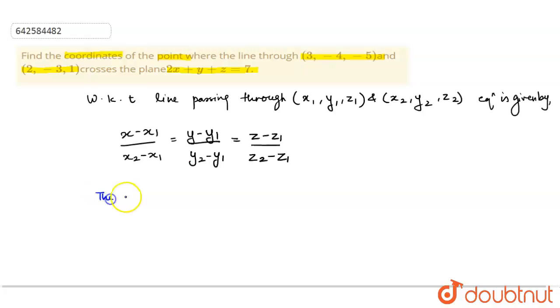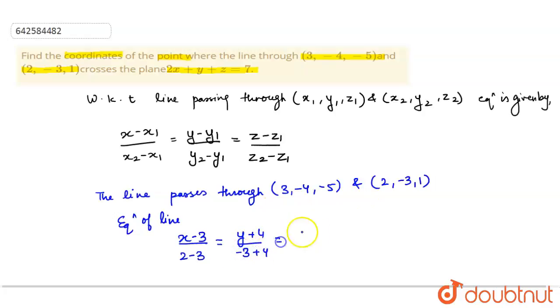It is given in the question, the line passes through (3, -4, -5) and (2, -3, 1). So, the equation of line according to the question would be (x - 3)/(2 - 3) = (y + 4)/(-3 + 4), this would be -3 + 4, = (z - (-5))/(1 - (-5)). So, (z + 5)/(1 + 5).